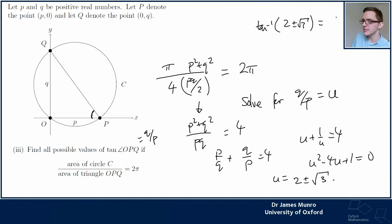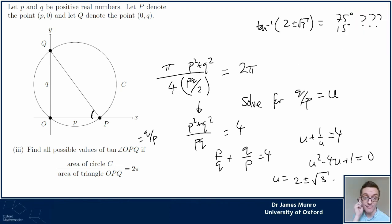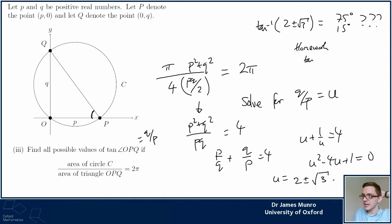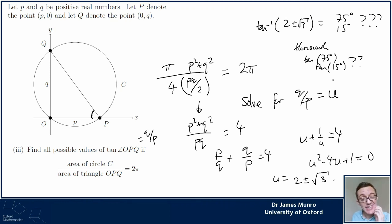I think this is 75 and 15 degrees - not a fact I was expecting anyone to know, so I rewrote the question to just find tan θ and stop. Homework problem: work out tan(75°) and tan(15°) using double angle and angle addition formulas. If you don't know what I'm talking about, ignore that - we'll get to it at some point but not right now.